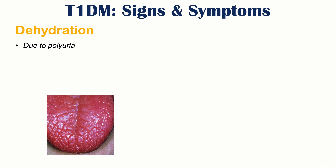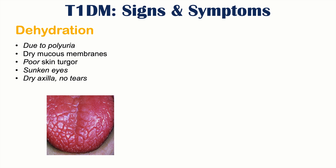Dehydration can also occur, due to polyuria causing excessive fluid loss. This can lead to dry mucous membranes — the tongue appearing very dry — and poor skin turgor, where skin pulled up does not return easily. The eyes can be sunken, and the axilla can be dry with no sweating. In severe cases there may be no tears. Dehydration can also lead to hypotension, causing the patient to feel dizzy.